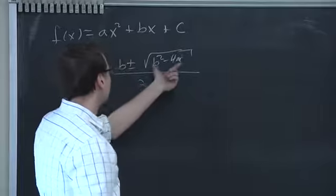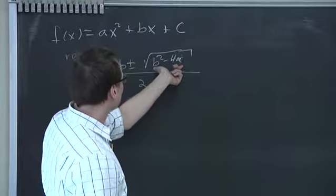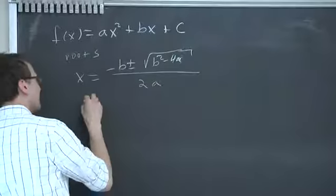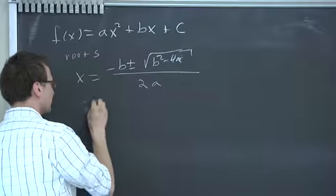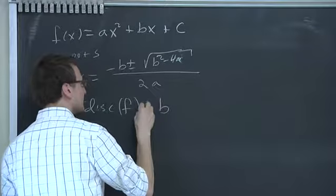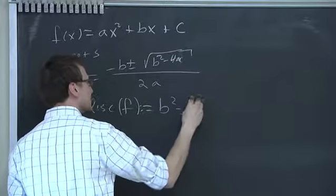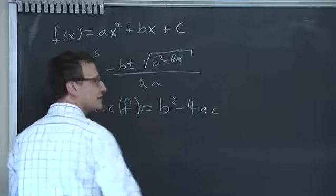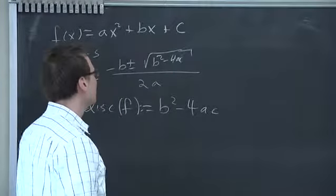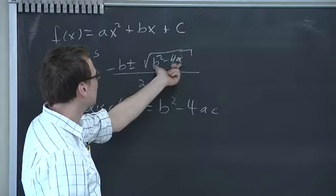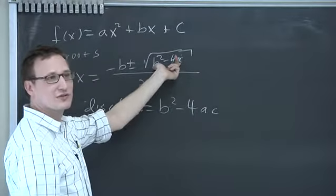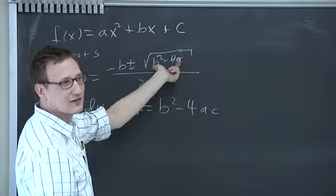This number in here we call the discriminant. It's probably called that because, for instance, if this is negative, then you have imaginary roots, et cetera.